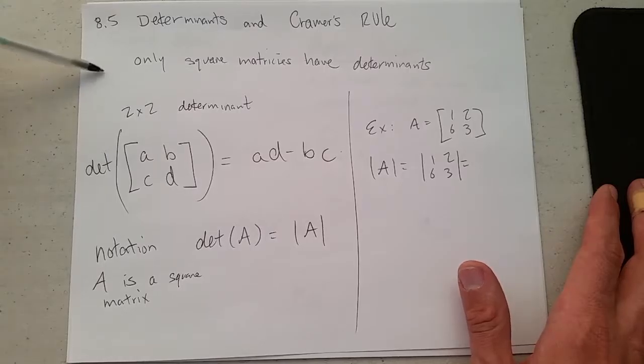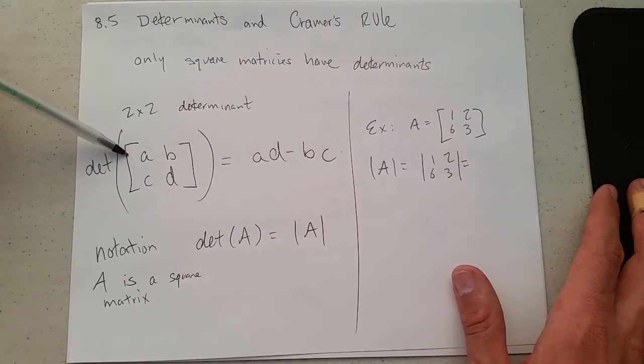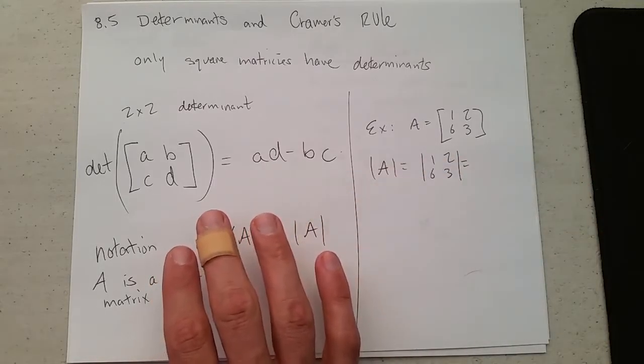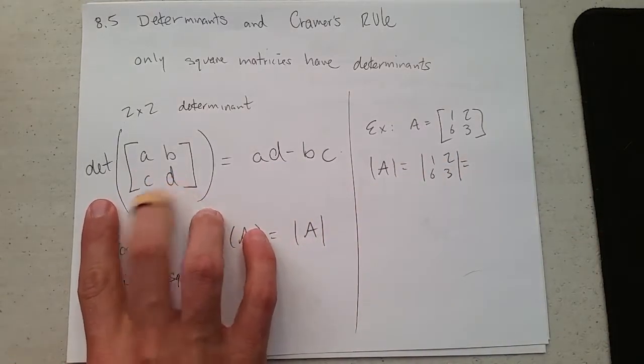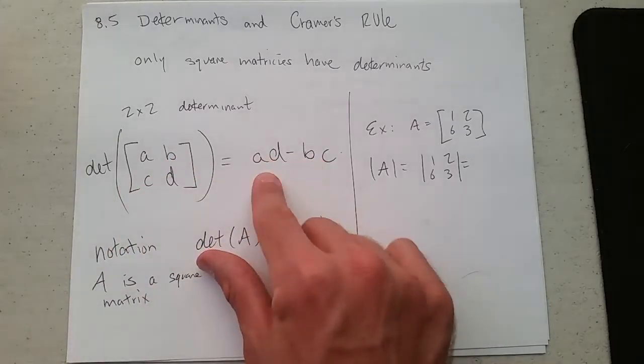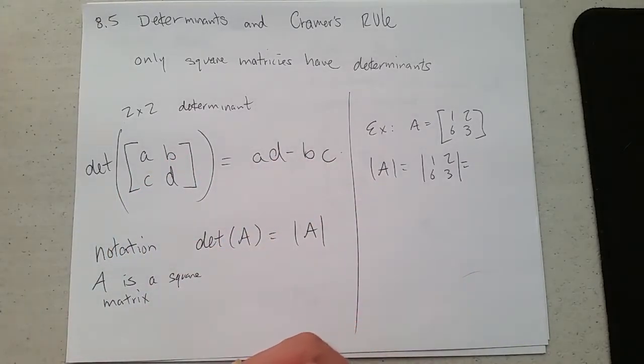We're starting with the smallest square matrix. You want to think about going down the diagonals, so you do AD minus BC. That's all there is to get the determinant.